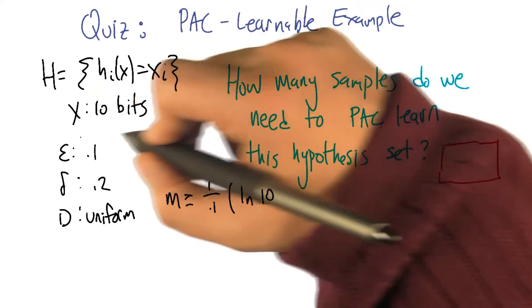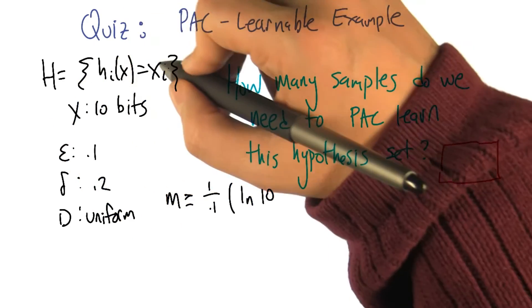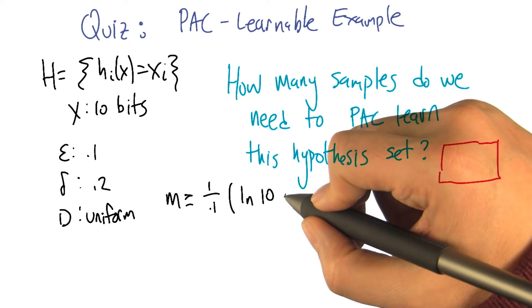Right, so it's not 2 to the 10. Even though the input space is 2 to the 10, the number of hypotheses, there's one hypothesis corresponding to each of the bit positions. Good? Right.